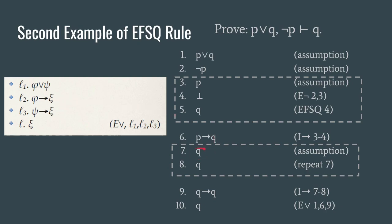So we're going to start with Q as an assumption and we're going to try to derive Q from that. Well that's easy enough. We can just use our repeat rule and then we're done.